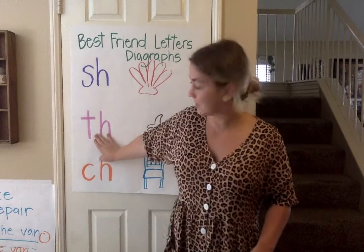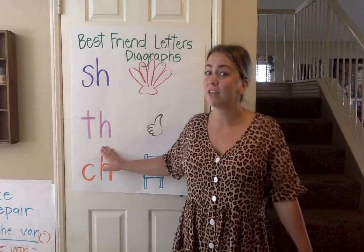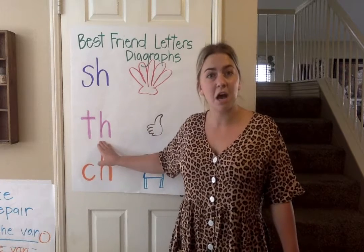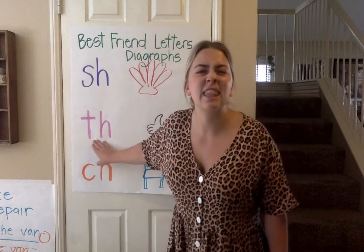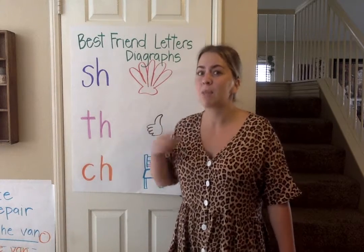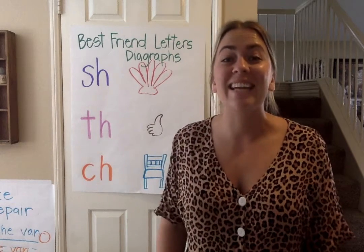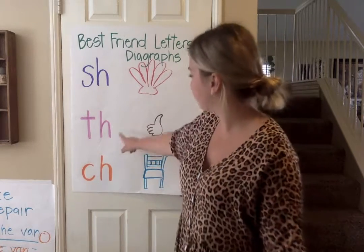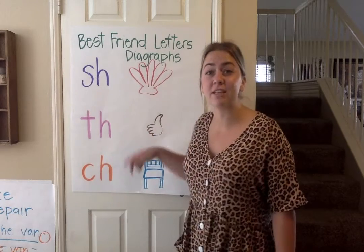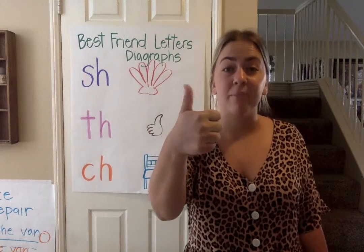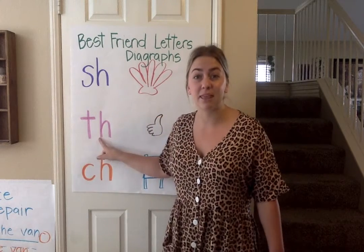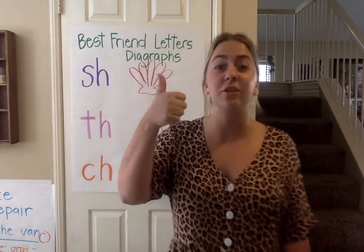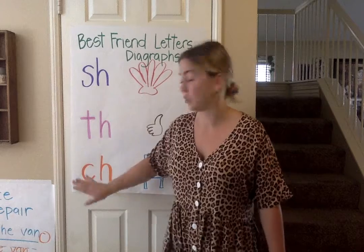The next one we are doing is T and H. If we were sounding it out regularly it would sound like the individual sounds, but that's not what it is. It's kind of tricky — you take your tongue and you bite down on it and you go 'th.' The movement we have for this one is wiggling your thumb, because 'thumb' starts with the best friend letter sounds T and H. Ready? One, two, three — th! Good job!